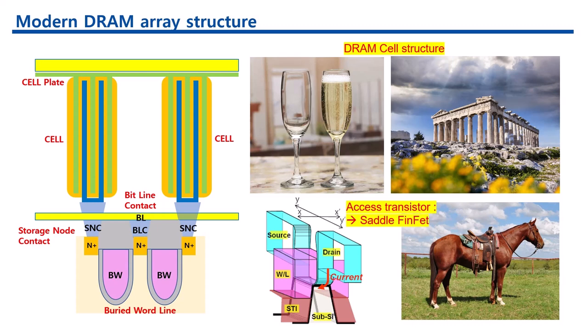2. Saddle FinFET structure. The saddle FinFET is used to address short channel effects, which are common in smaller transistor dimensions. This structure improves the electrostatic control of the gate over the channel, reducing leakage current and improving the performance of the transistor.